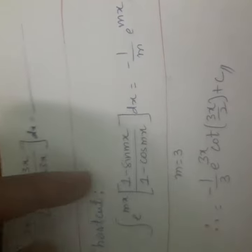Here what I will have to do is compare both of these. Upon comparing, I am getting m value as 3. Once I obtain m value as 3, my next task is to substitute this m value as 3 in the above shortcut. So I will be getting my answer is minus 1 by 3 times e^(3x) times cot(3x by 2) plus C.